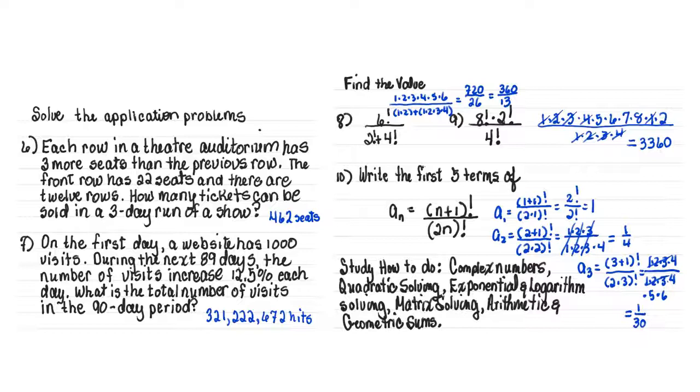Here's the answers to 6 and 7. Number 6 is the arithmetic, and 7 is the geometric.